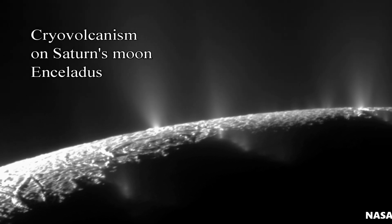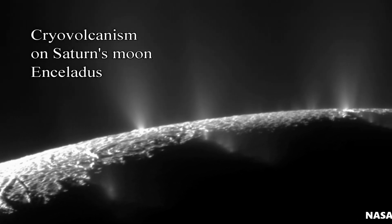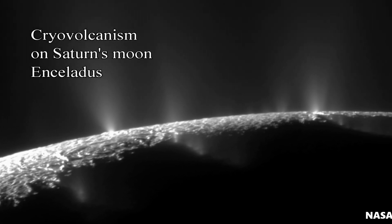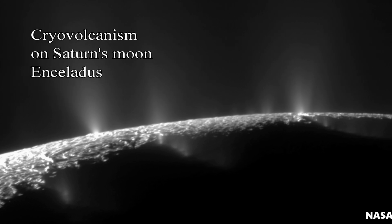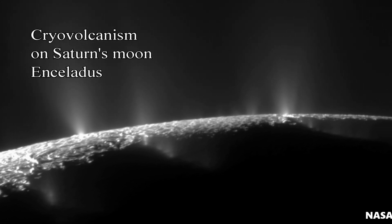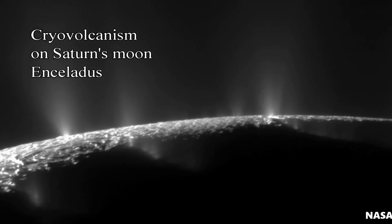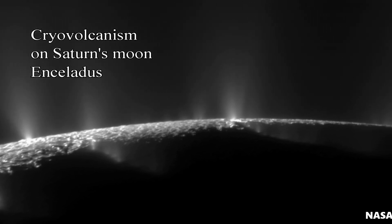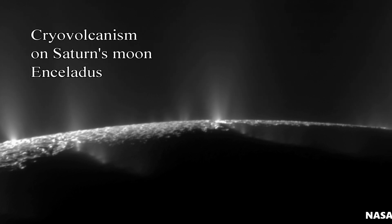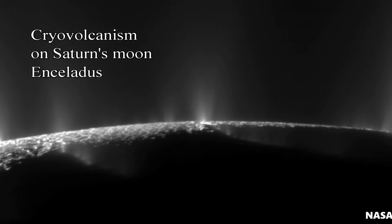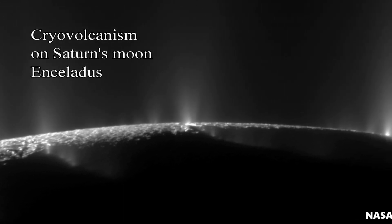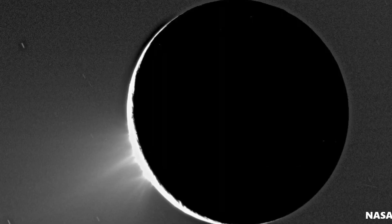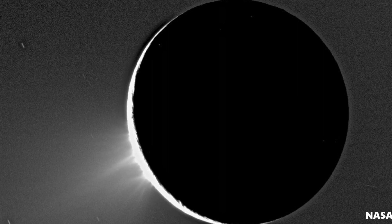Triton, Titan, Enceladus, and Pluto have all exhibited cryovolcanism. Here is a photo of Saturn's moon Enceladus — a small icy moon about 500 kilometers in diameter. Those white plumes you see on the surface going into space are from cryovolcanoes. The eruptive material is water, which erupts to the surface, freezes, and much of it gets ejected into space.